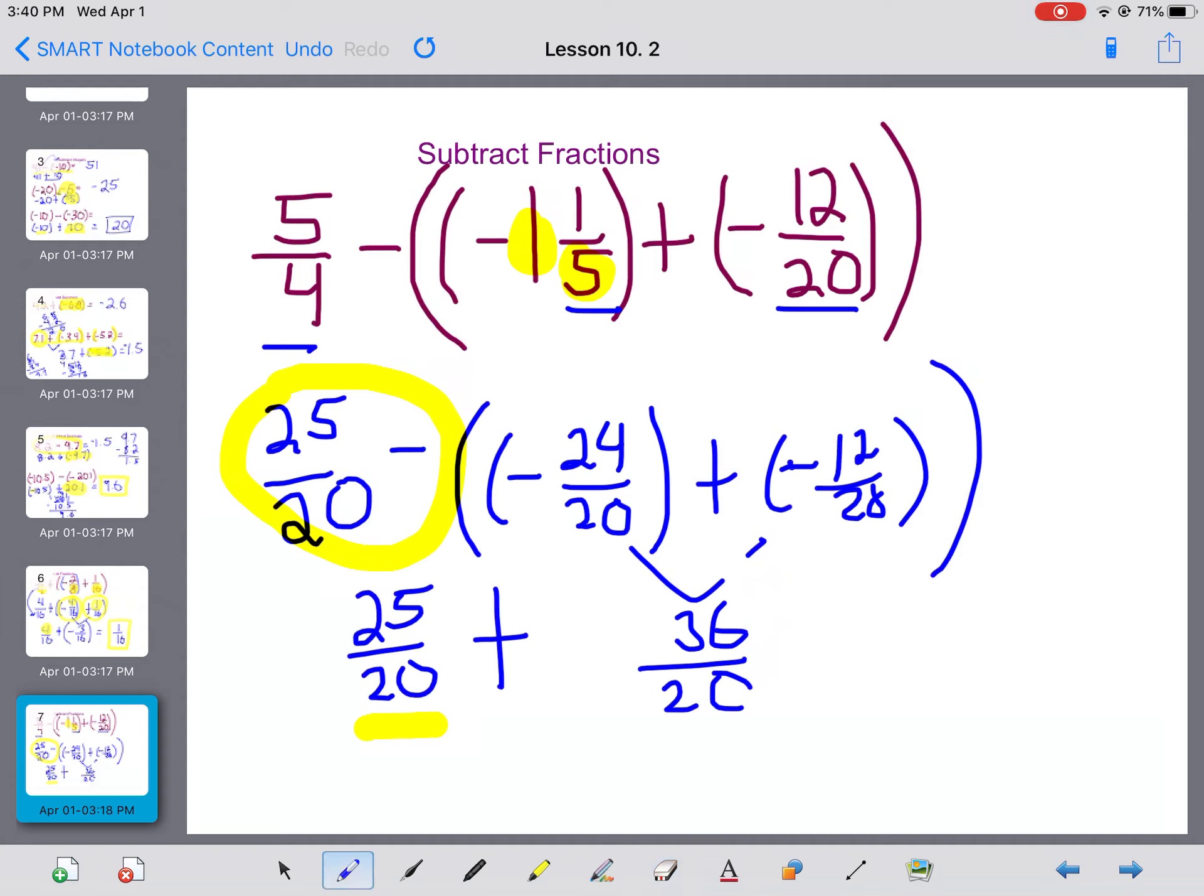So, 25 plus 36, I should be able to do that in my head, I get 61 20ths, which I can simplify. Again, you may do this on the side, but I have 3 and 1 whole 20ths.